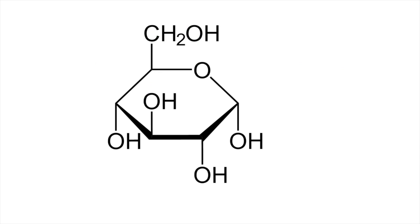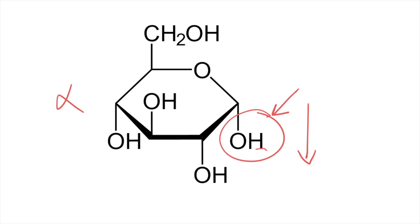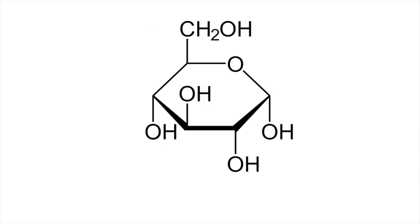Glucose comes in two types: alpha glucose and beta glucose. The only difference between alpha and beta glucose is the position of the OH group. If it's alpha glucose, then this OH is going to be pointing down. Beta glucose on the other hand has this OH group pointing upwards. It is quite important to know the number of the carbon atoms in the glucose molecule, so we number these carbon atoms starting from this side: carbon 1, 2, 3, 4, 5, 6.